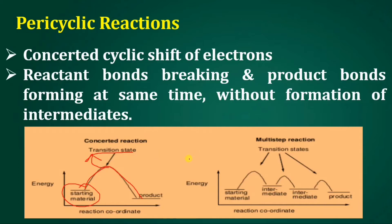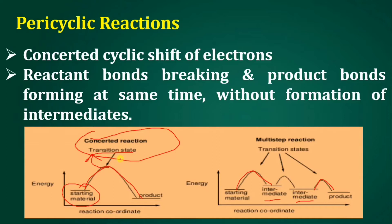Differentiating concerted reactions from multi-step reactions: in a multi-step reaction there is formation of an intermediate at each and every step. The starting material proceeds, forms one intermediate, which converts into another intermediate, and finally gives the product. Such intermediate formation is absent in concerted reactions — this is the beauty of this reaction. Intermediates like carbocation, carbanion, carbene, nitrene, etc. are not formed.